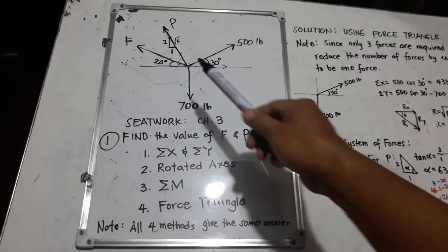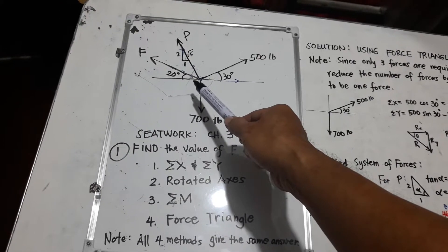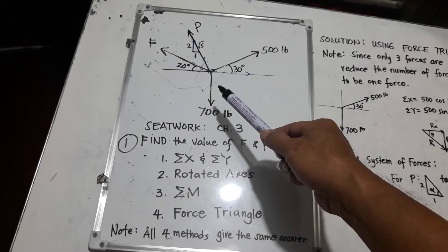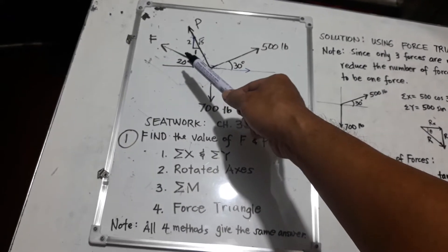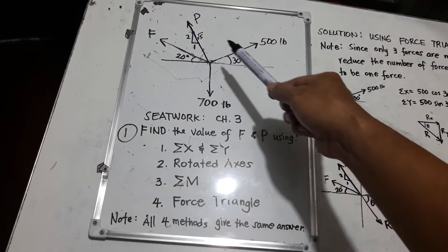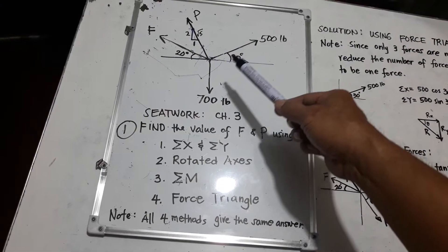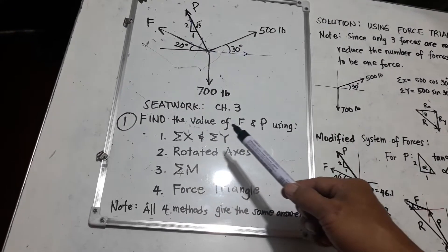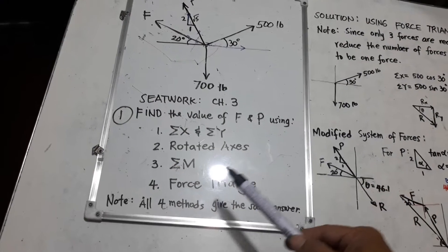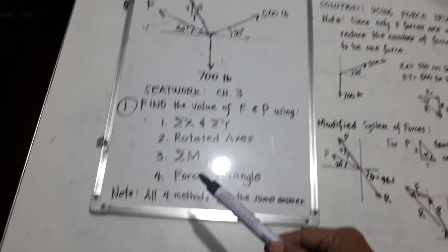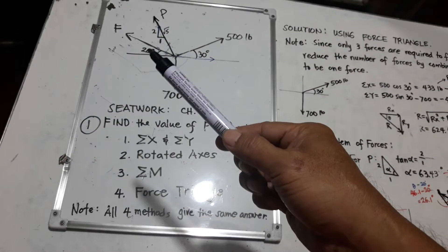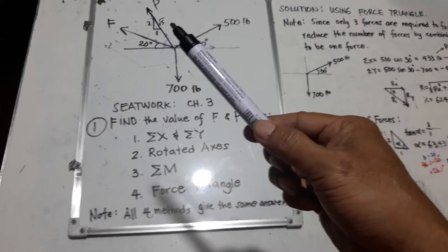So, for this problem, there is a given system of forces, four of them, in which F is unknown and also P is unknown. What are given is this 500-pound force and 700-pound force. We need to find the value of F and P using force triangle. How do we solve for the value of F and P if the method to be used is using the force triangle?